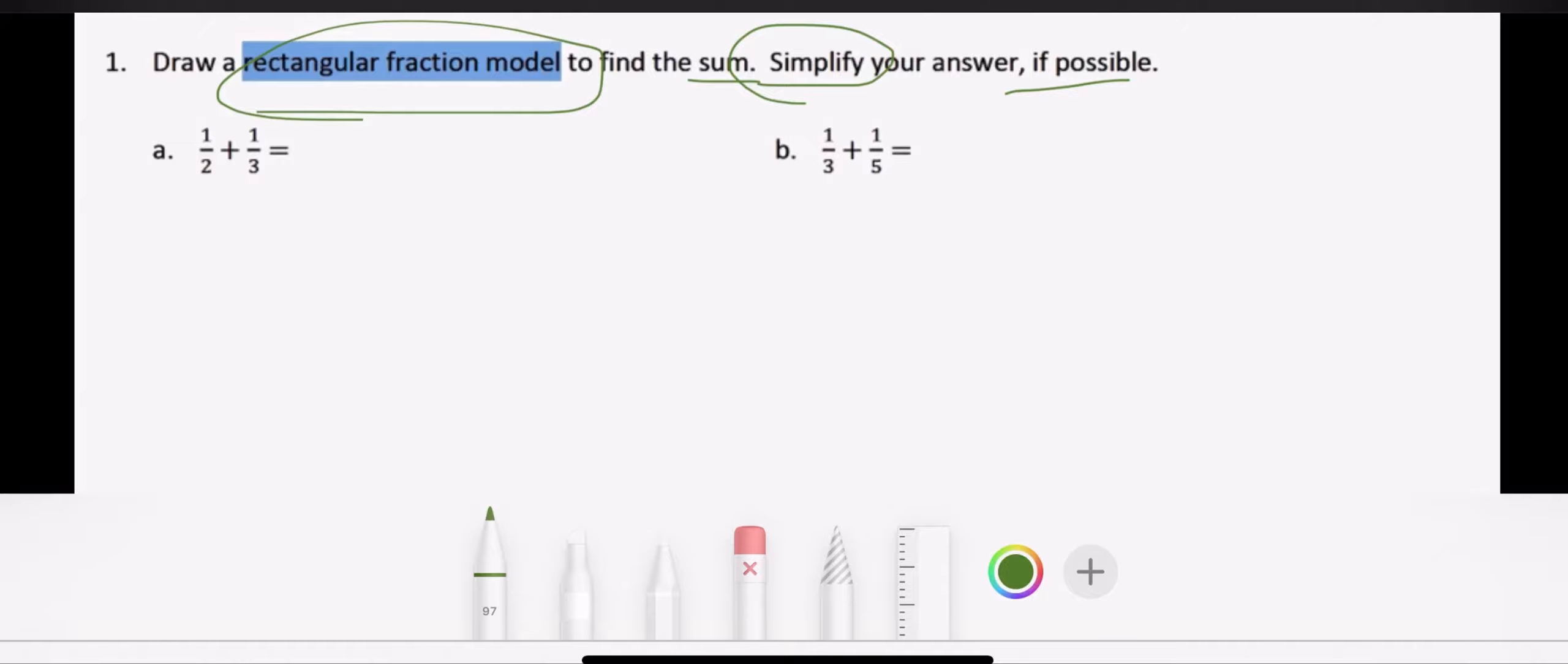So I'm looking at my part A. It tells me that I have to add one half plus one third. So in my head right now I'm thinking, okay, I have to use that rectangular fraction model in order to get full credit for this answer. So I'm going to have one half, which I'm going to draw a rectangle and then I'm going to split it in half. And I know that one half is the same as saying like one out of two. So I'm going to shade in one box out of two.